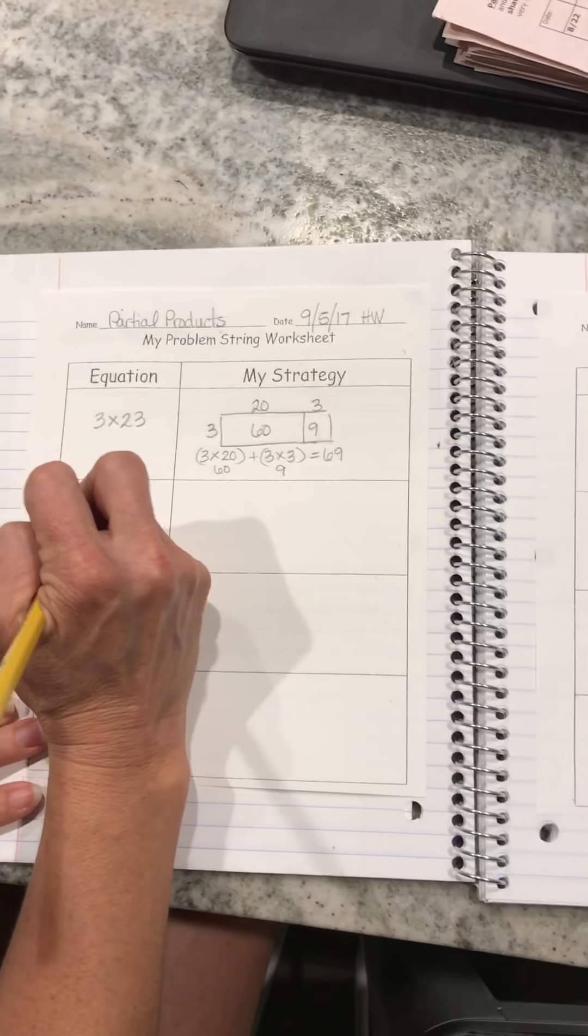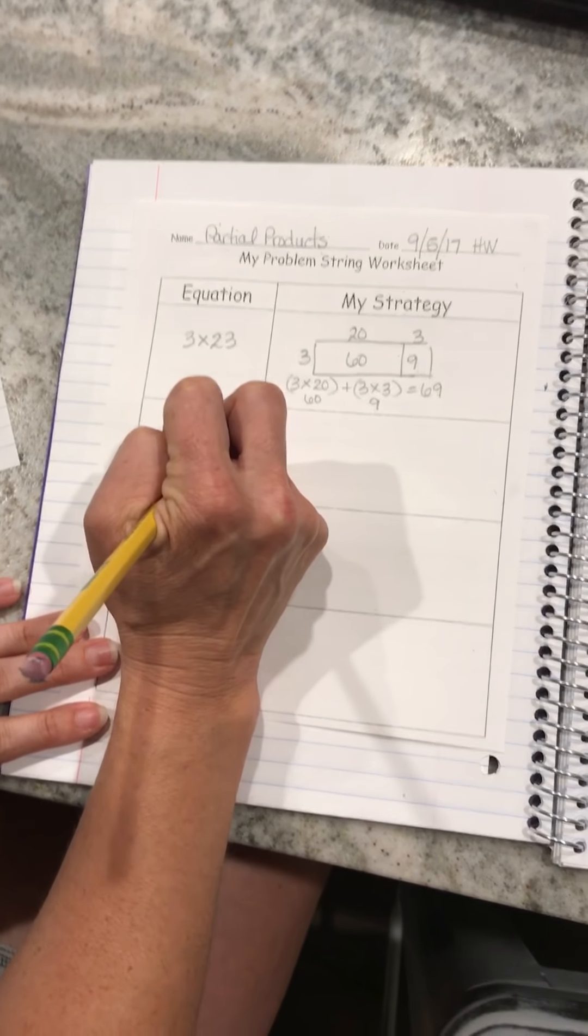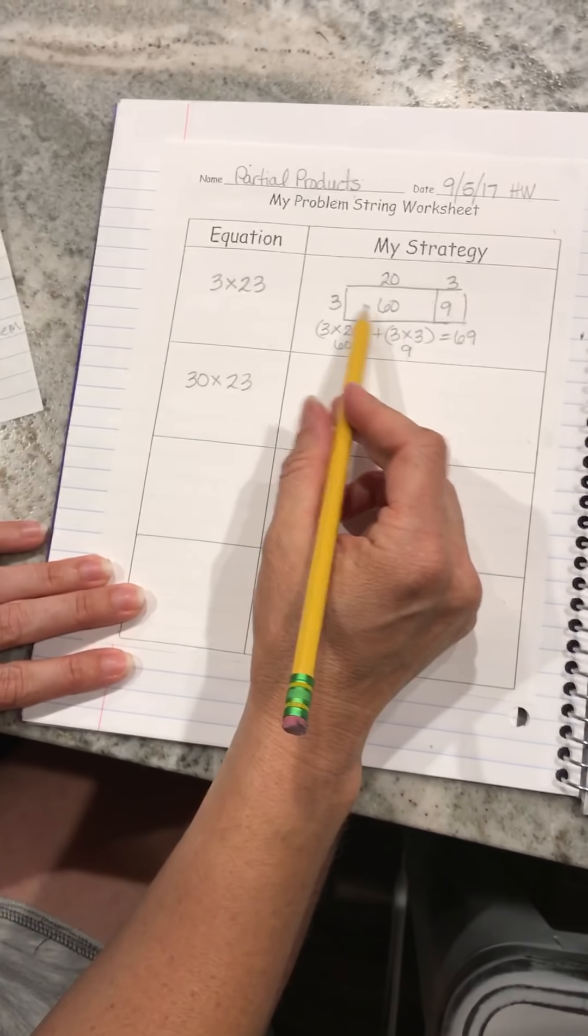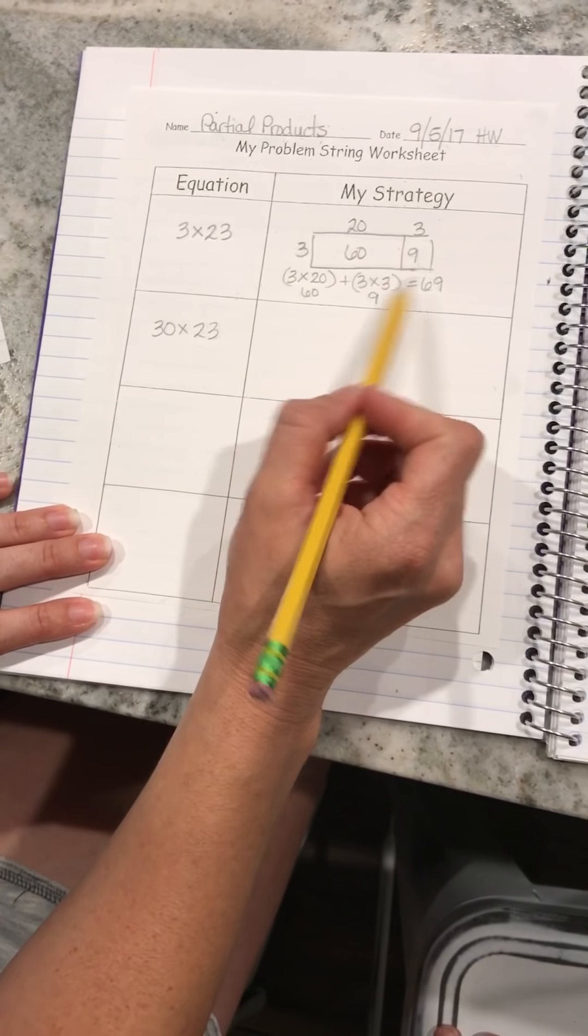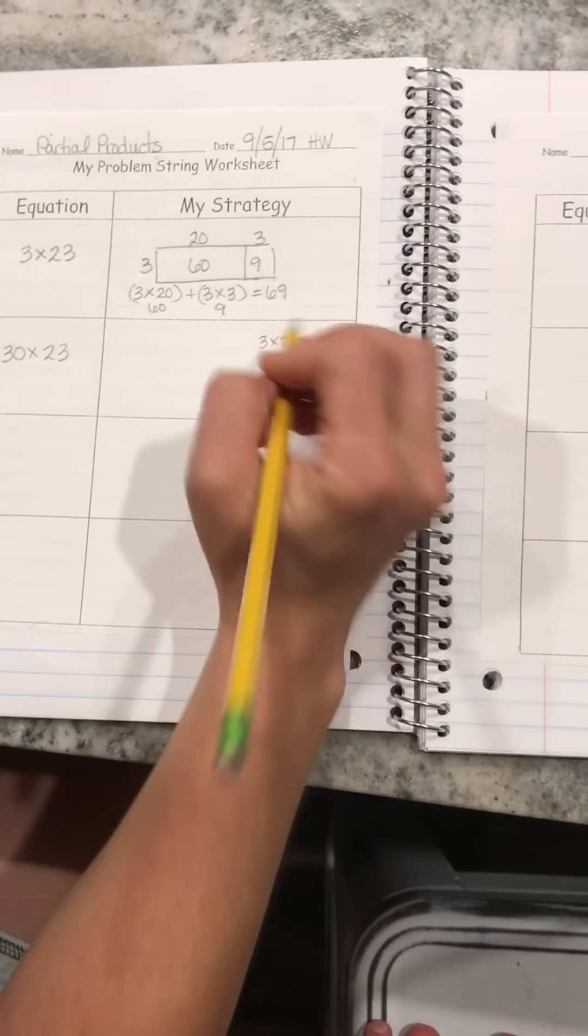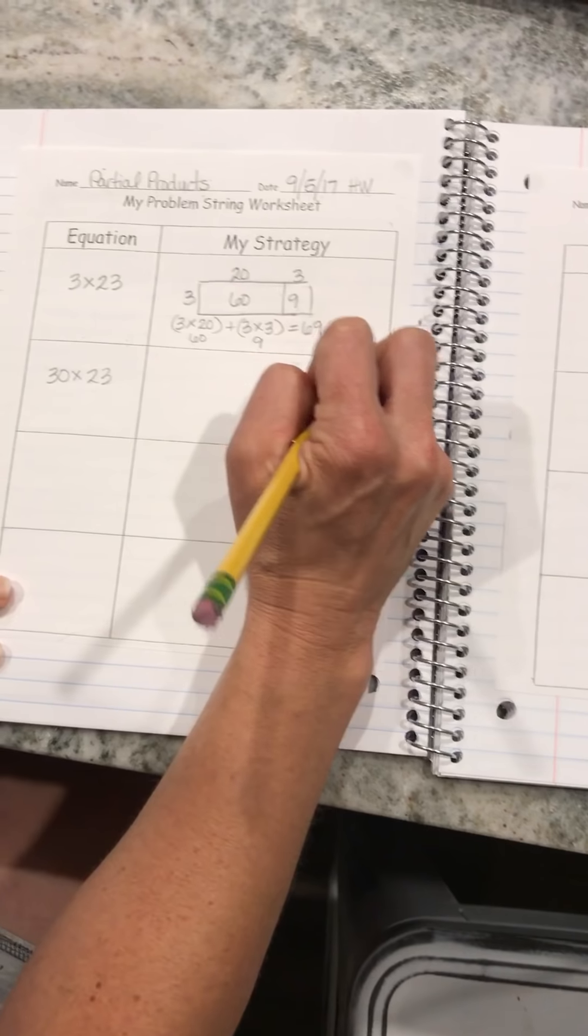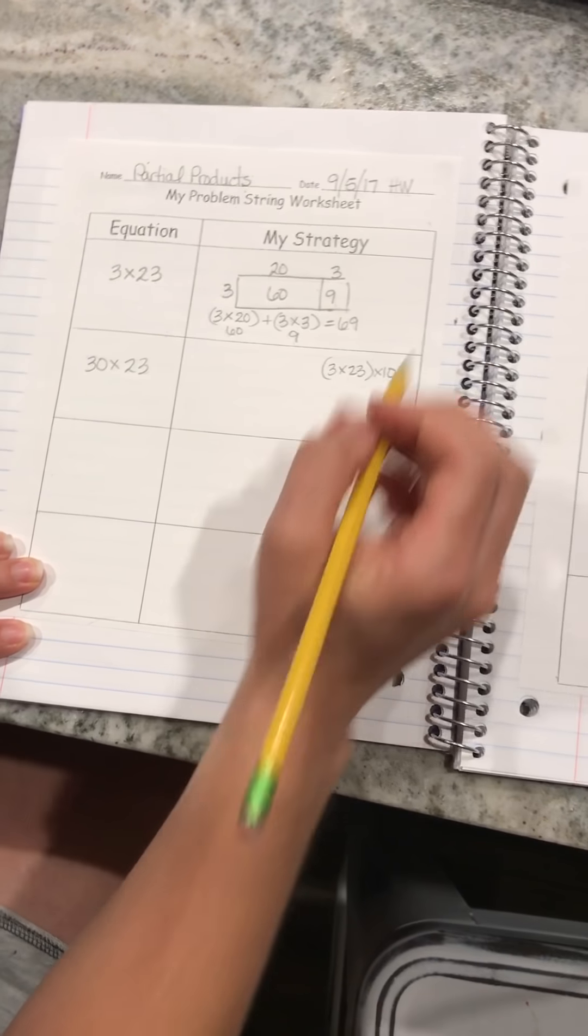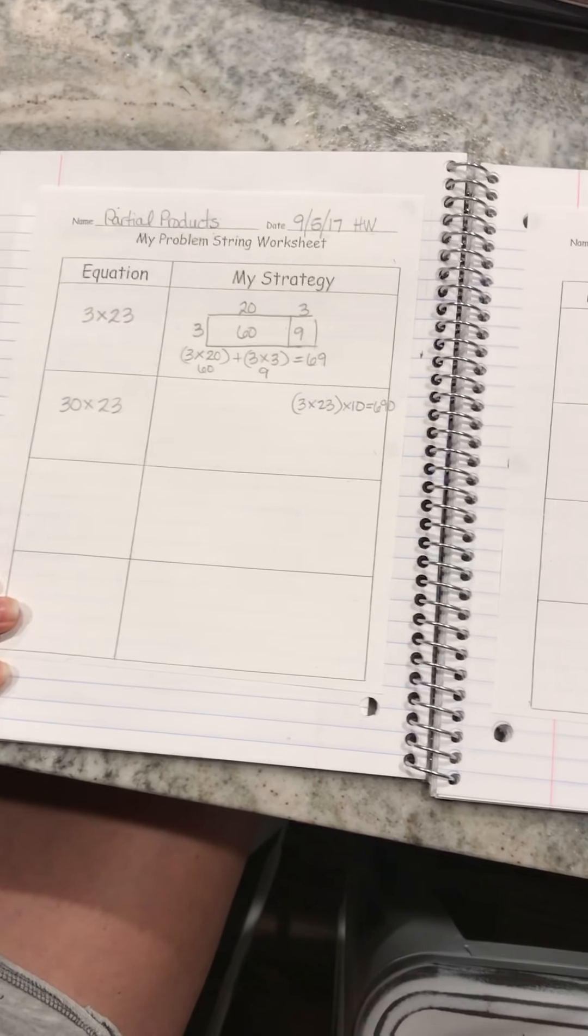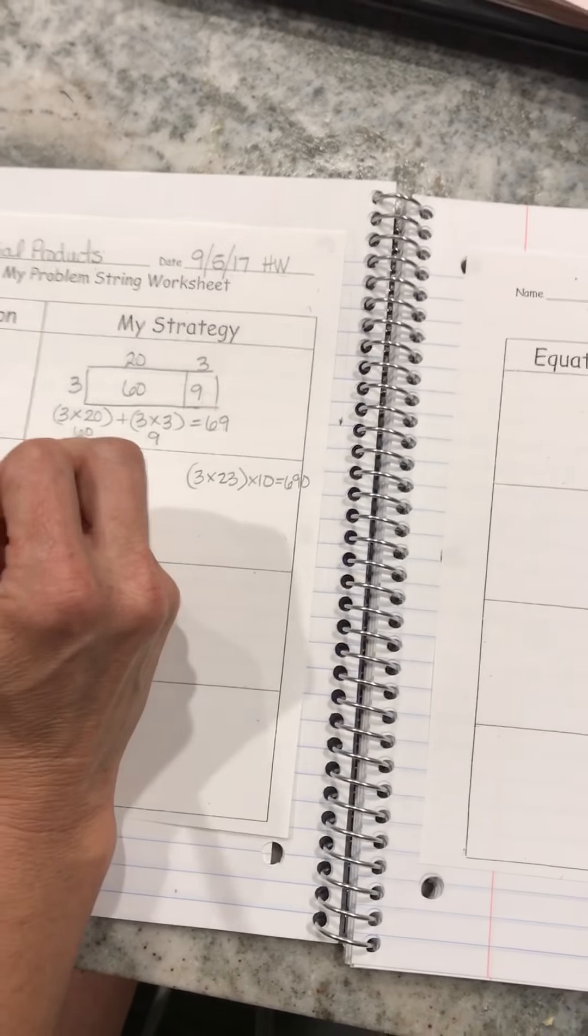My next problem is 30 times 23. I'm going to kind of do this the same way. You can either take it and know that 3 times 23 is 69, and you can times that again by 10 and you would get 690. That's one way to do it.